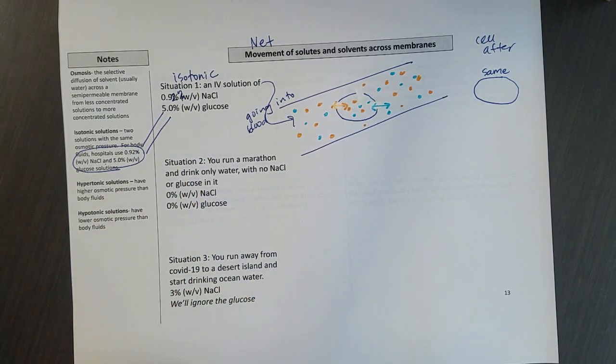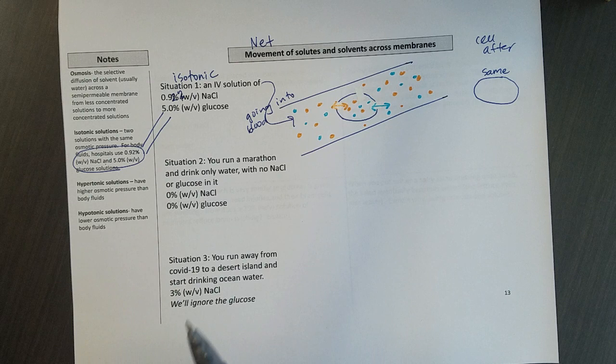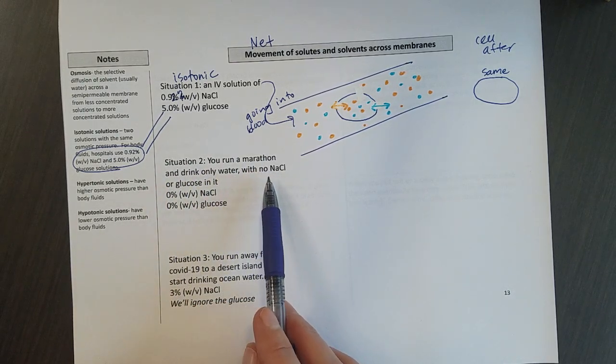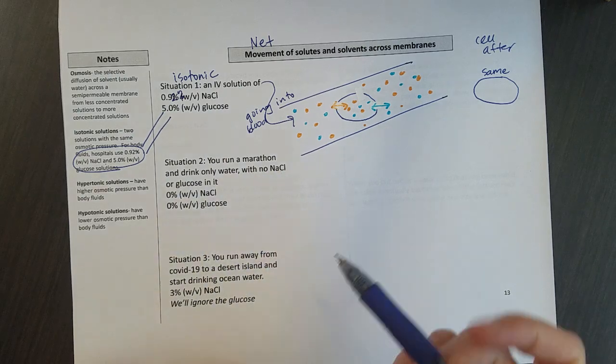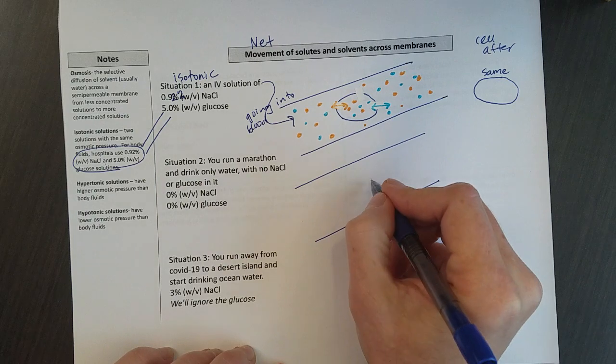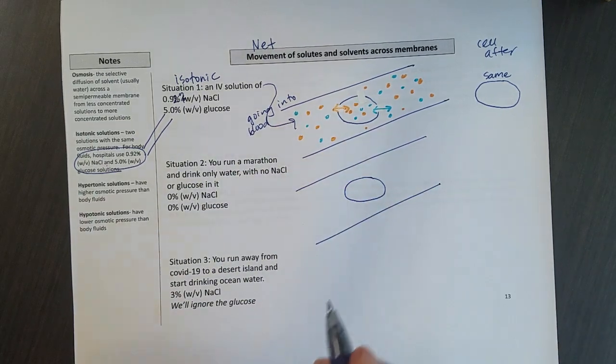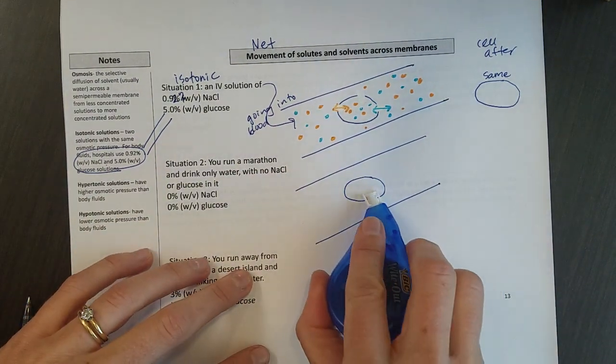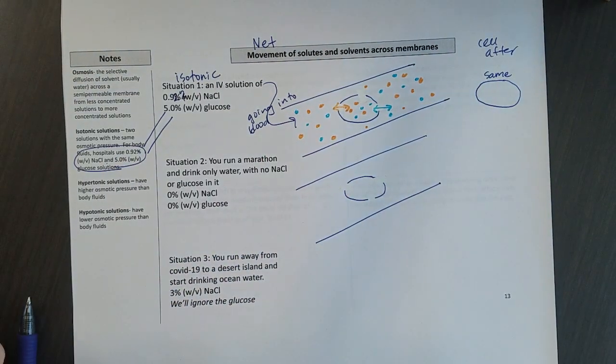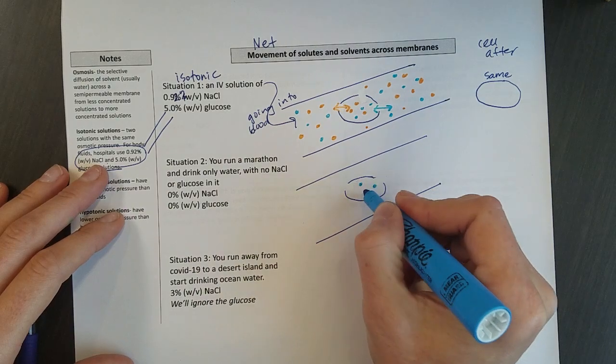So second scenario doesn't apply to me. I don't run marathons. I run much less. But say you run a marathon. You make a bad decision, you only drink water. And there's no salt or glucose in it. Here's what it looks like if you look into your cell. So again, semi-permeable membrane in my cell, so I make a few holes in it.